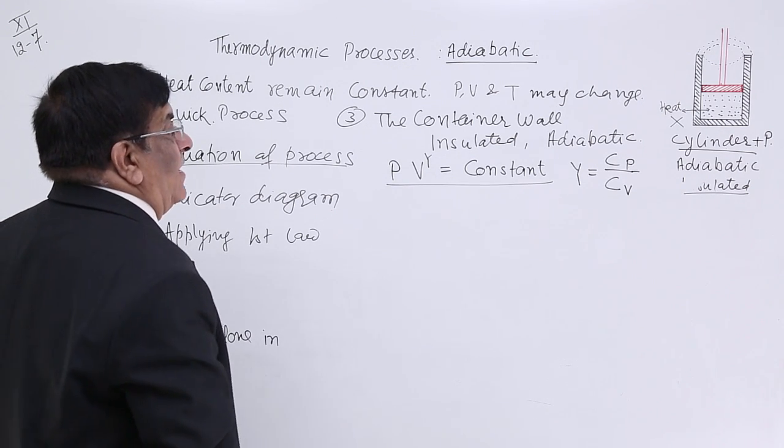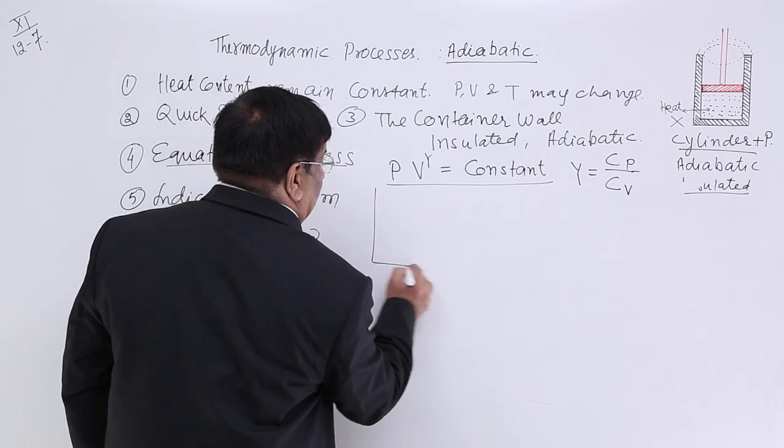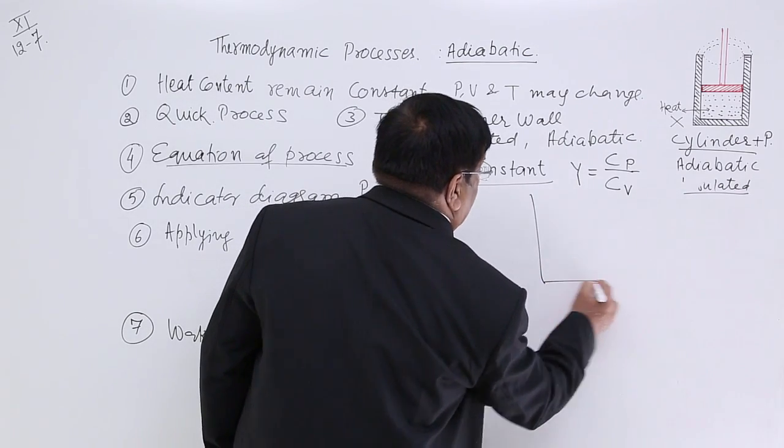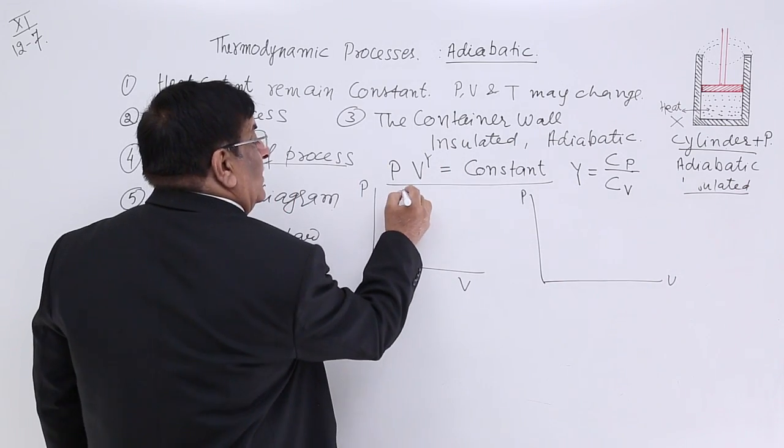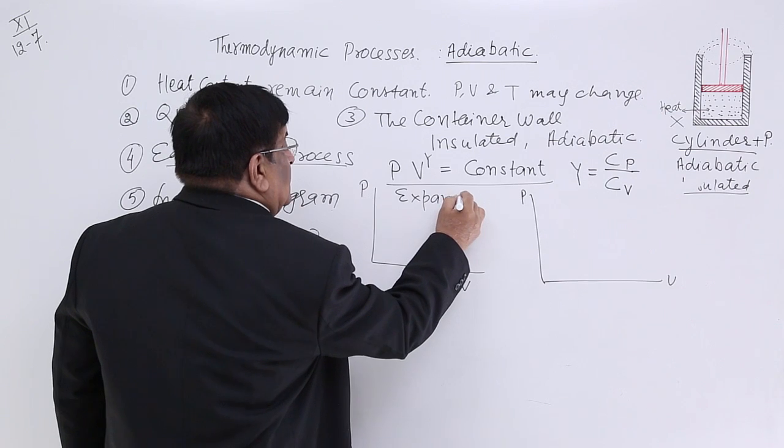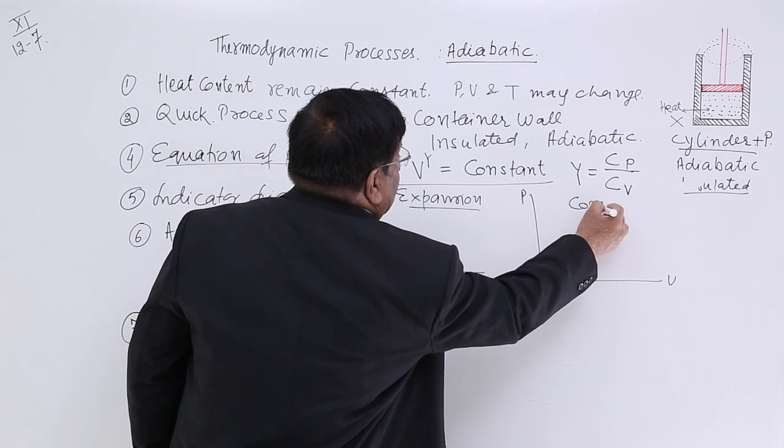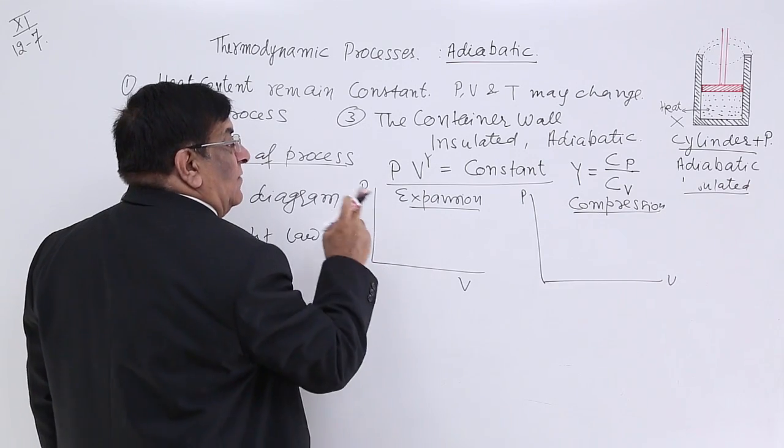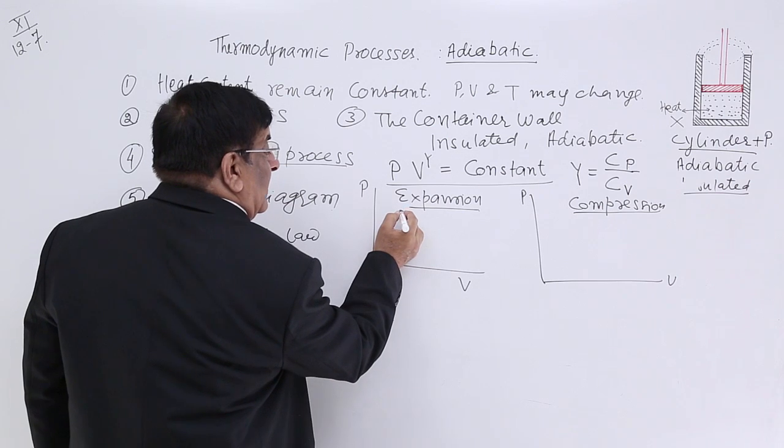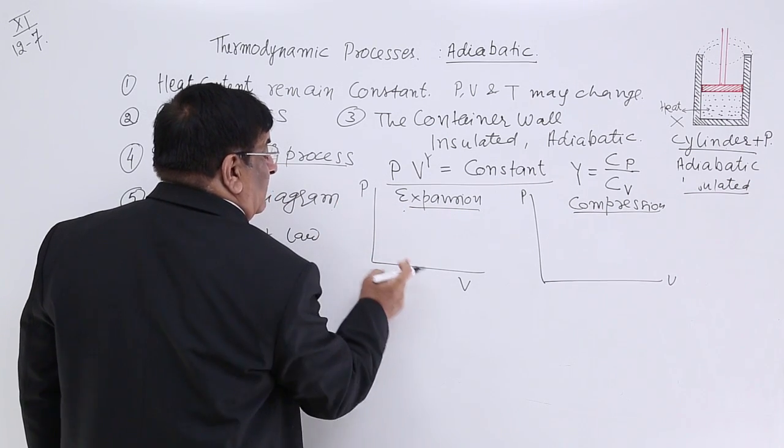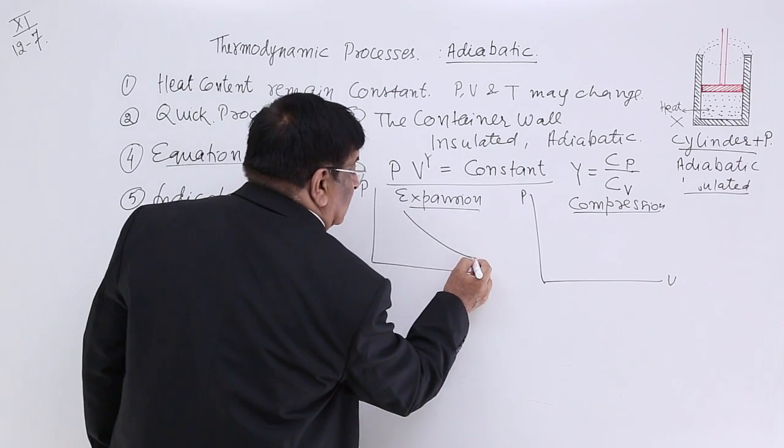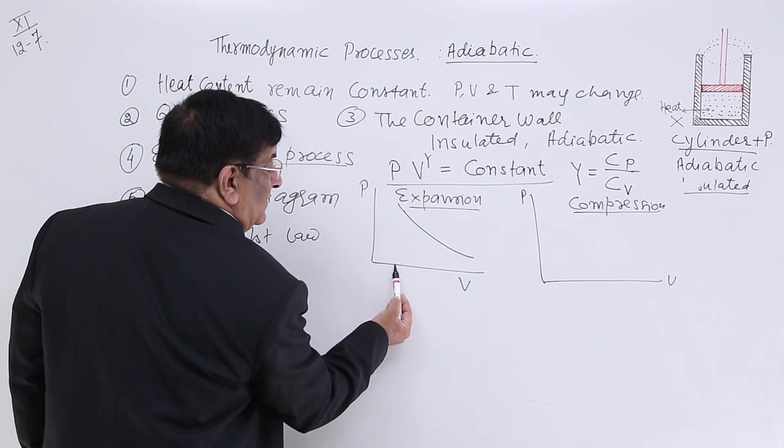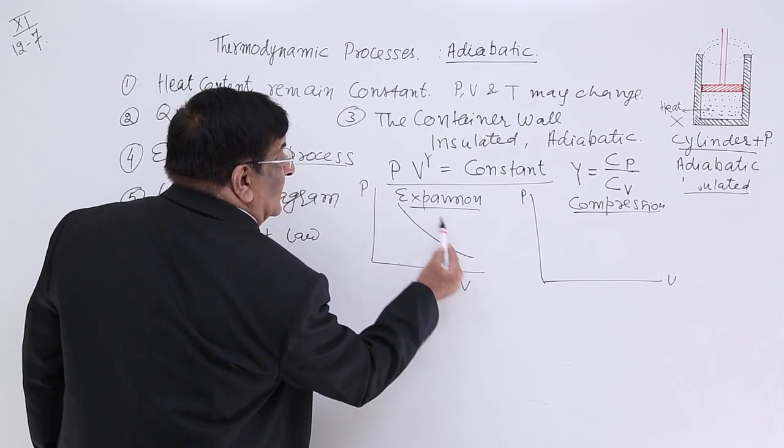Indicator diagram, okay. I make here both the indicator diagram so that we can differentiate between the two. This is P and V. Again, P, V. One I will make for expansion and one for compression. In this I make two lines, one for isothermal and one for adiabatic. In isothermal, we have already studied when volume is increased, pressure decrease and this is the graph for isothermal. Now, volume started less, increased more, that is why we call it expansion.